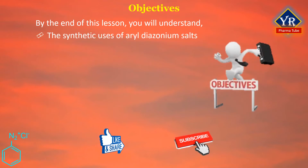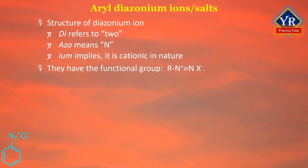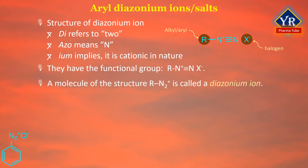By the end of this lesson, you will understand the synthetic uses of aryl diazonium salts. Introduction to aryl diazonium salts: the prefix 'di' refers to two, 'azo' is indicative of nitrogen, and the suffix '-um' implies the compound is cationic in nature. Diazonium compounds or diazonium salts are a group of organic compounds sharing a common functional group R-N₂⁺X⁻, where R is an alkyl or aryl group and X is an inorganic or organic anion such as a halogen. A molecule of structure R-N₂⁺ is called a diazonium ion.